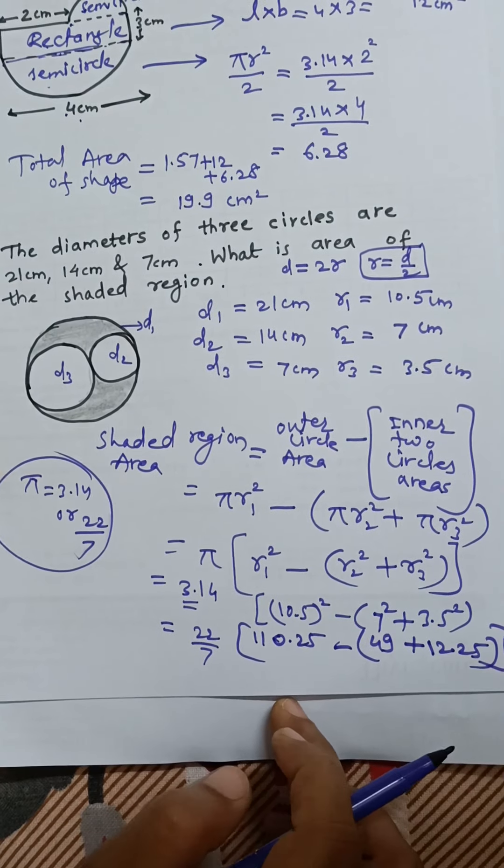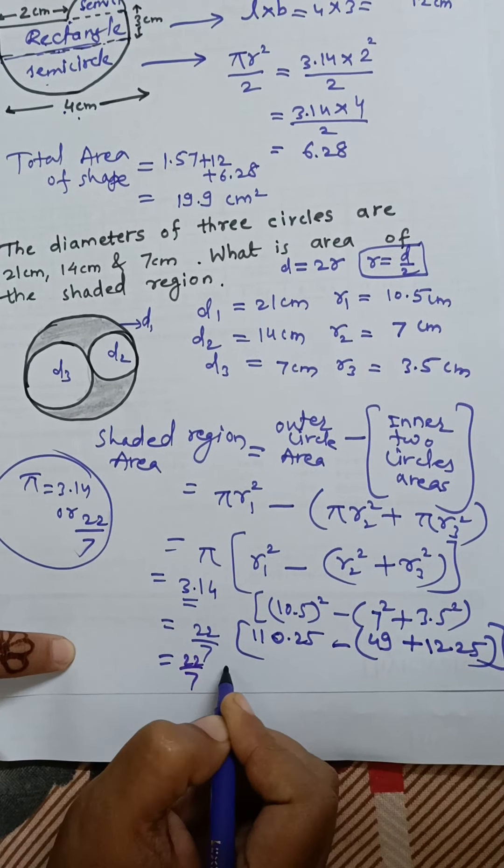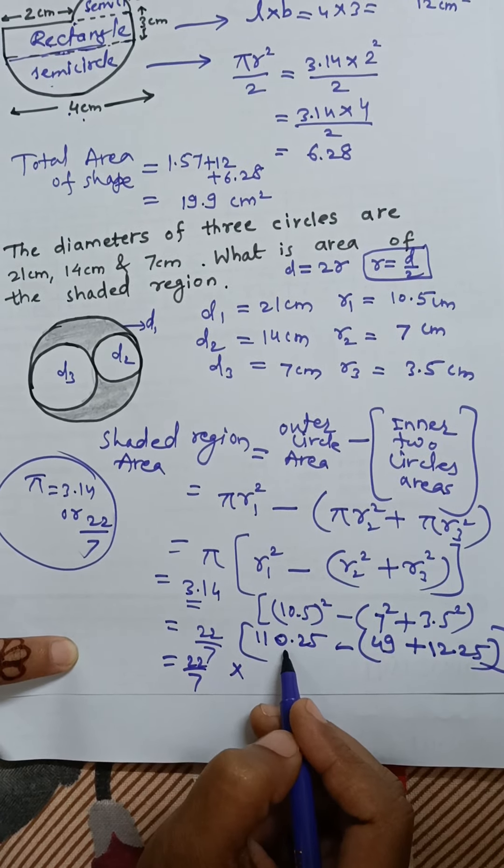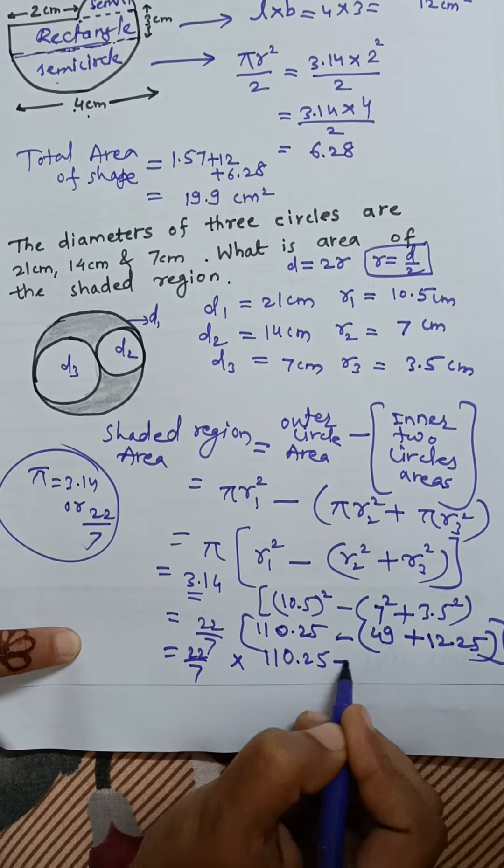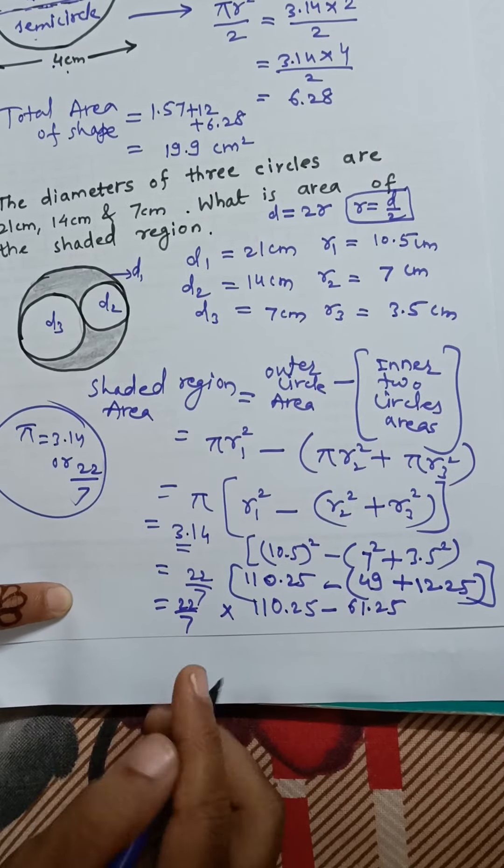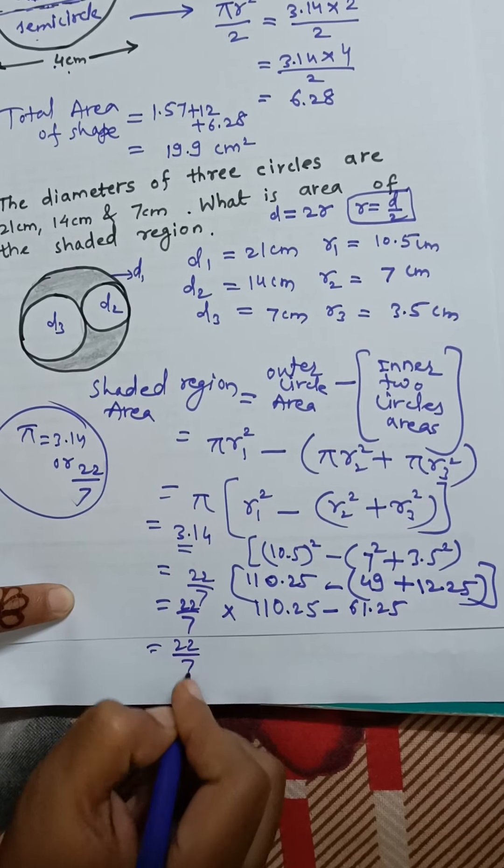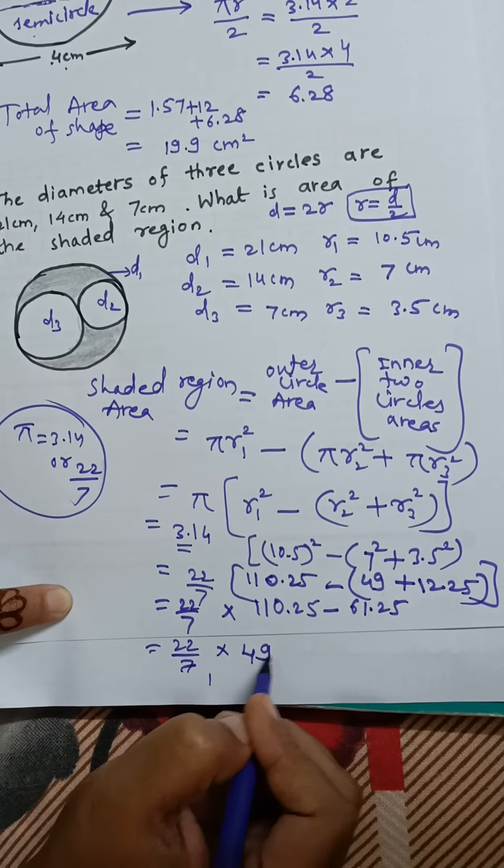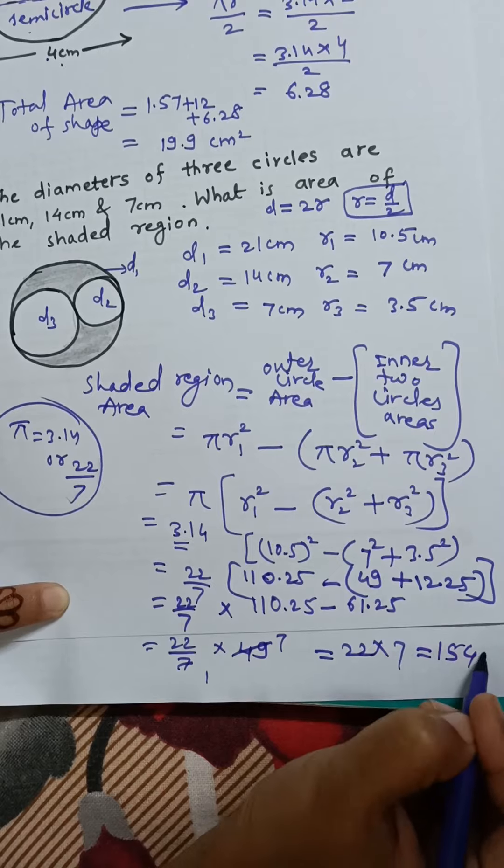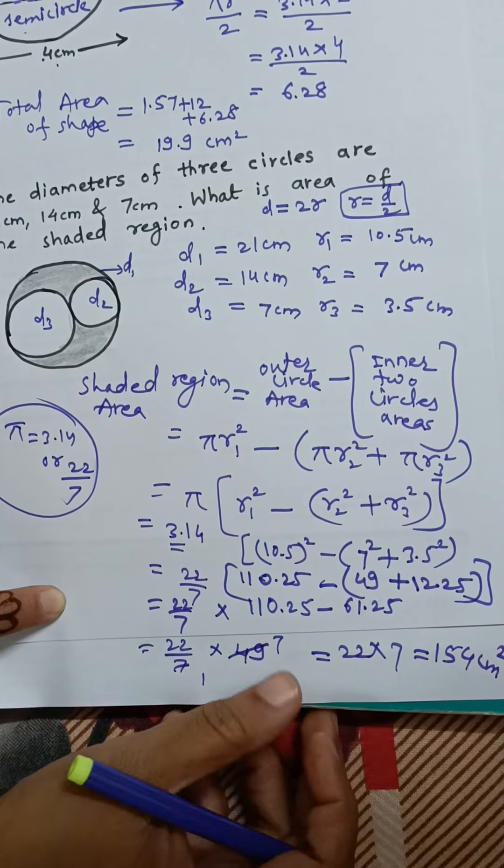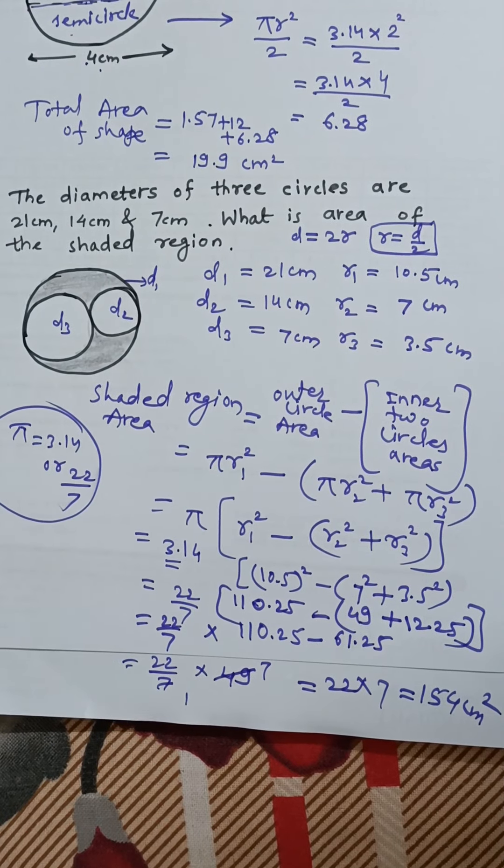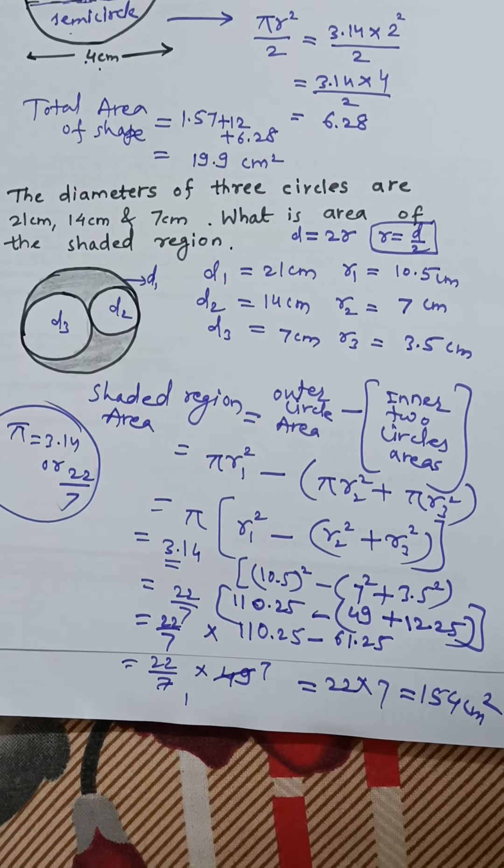We need to just solve it. So we take 22 by 7 multiply by, if we do this subtraction, 110.25 minus 61.25, we will receive 49. So 7 ones are 7, sevens are 22 into 7, which will get 154 centimeter square. In this way, the shaded region area we can find out. Thank you.